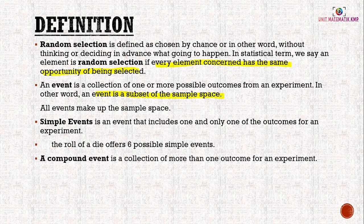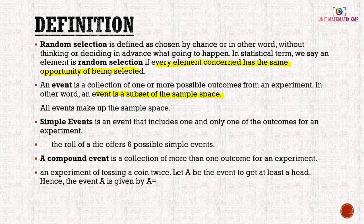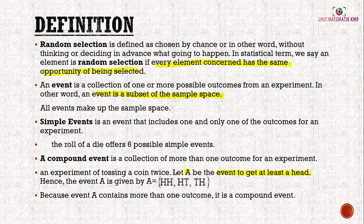A compound event is a collection of more than one outcome for an experiment. For example, in the experiment of tossing a coin twice, let A be the event to get at least one head. Event A is given by: head-head, head-tail, or tail-head. Because event A contains more than one outcome, it is a compound event.